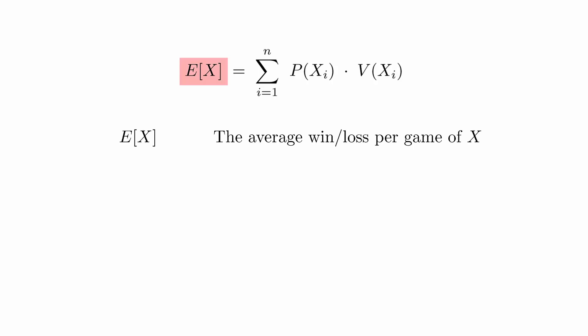E of X is the expected value of game X. This is how much you expect to win or lose on average each time you play the game.